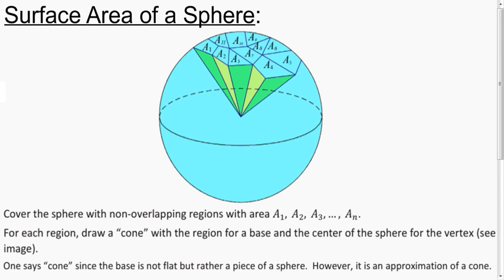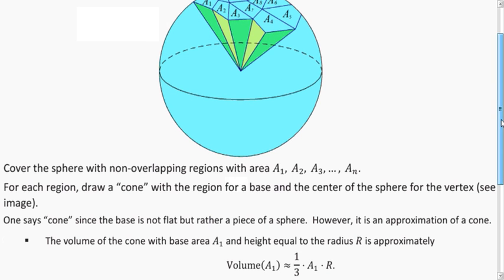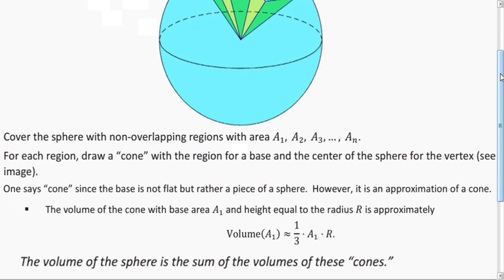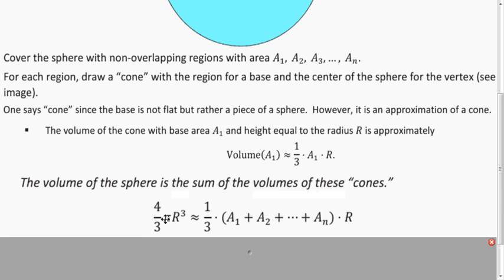Another important calculation is the surface area of a sphere. To do that, we break up the surface into a bunch of smaller regions and connect those regions to the center of the sphere so that we have solids very similar to cones. They're not actually cones because the bases aren't truly flat — they're parts of the sphere which is round — but they're pretty close. The volume of each cone is about one-third times that region times r (the radius, which would be the height).